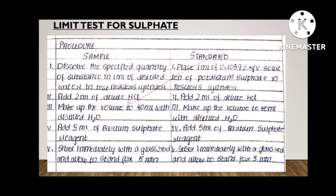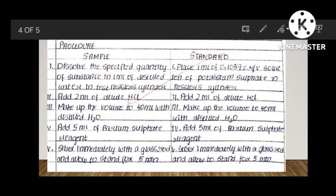Limit test for sulfate is also very important. Simple: dissolve specified quantity of substance in 1 ml of distilled water in a Nessler cylinder, then add 2 ml of dilute HCl and make the volume with 40 ml water. Then add 5 ml of barium sulfate. For standard solution, add 1 ml potassium sulfate, then 2 ml of dilute HCl, make up the volume to 40 ml, then add 5 ml of barium sulfate. Two Nessler cylinders of same size, length 50 ml. Stir immediately with a glass rod and allow to stand for 5 minutes.